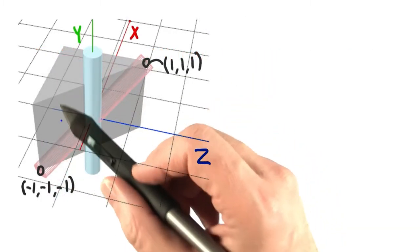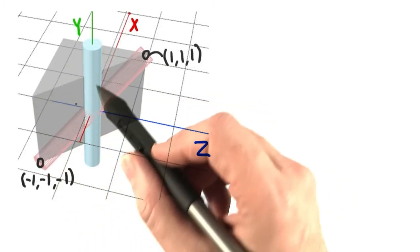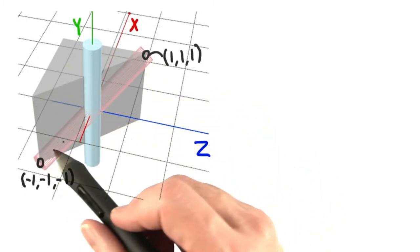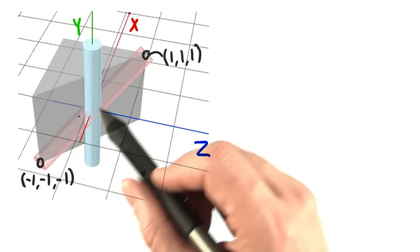We're going to use cylinders to make our object. Here's a cutaway view of the cube, showing the original position of the cylinder and its desired location in the wireframe, along one of the diagonals.